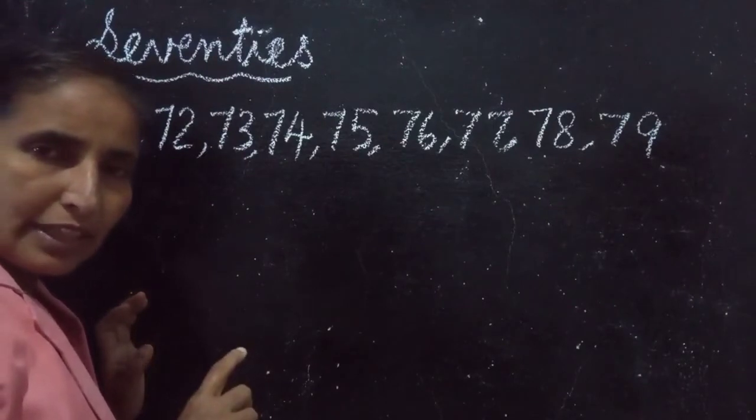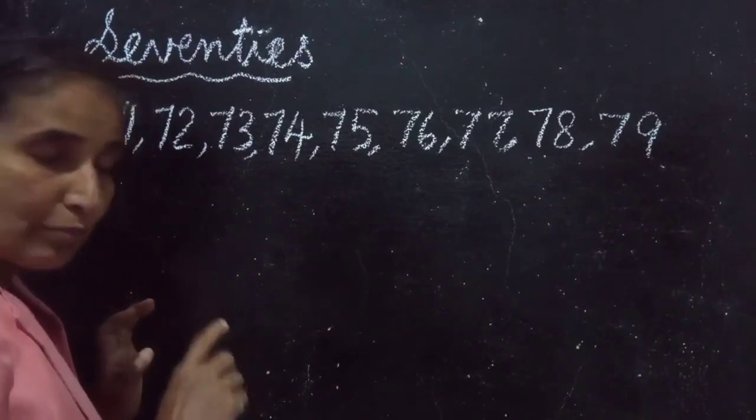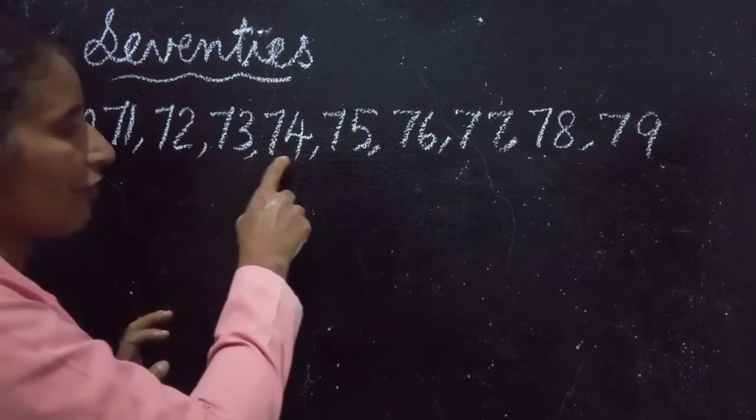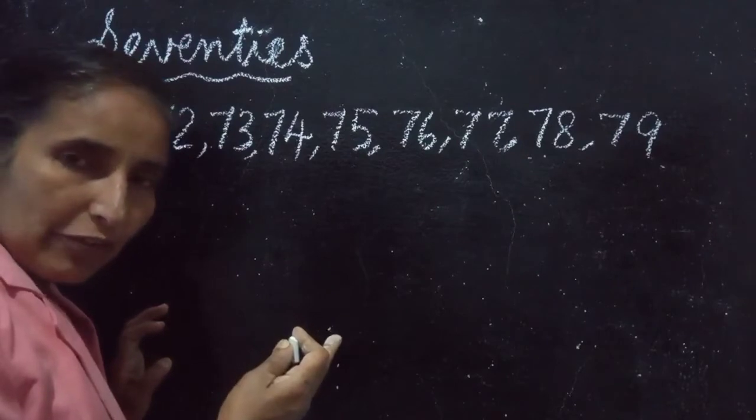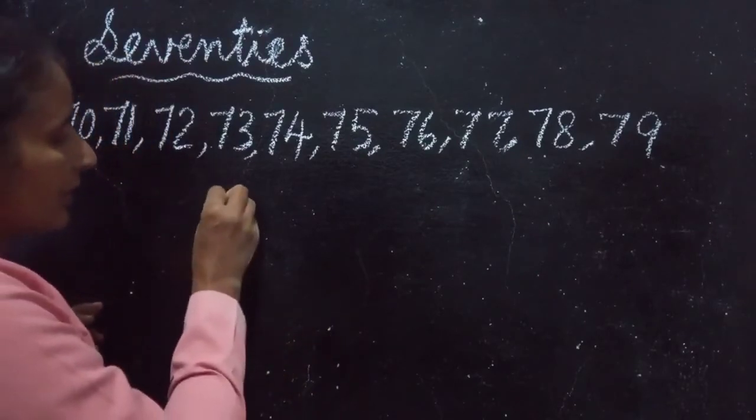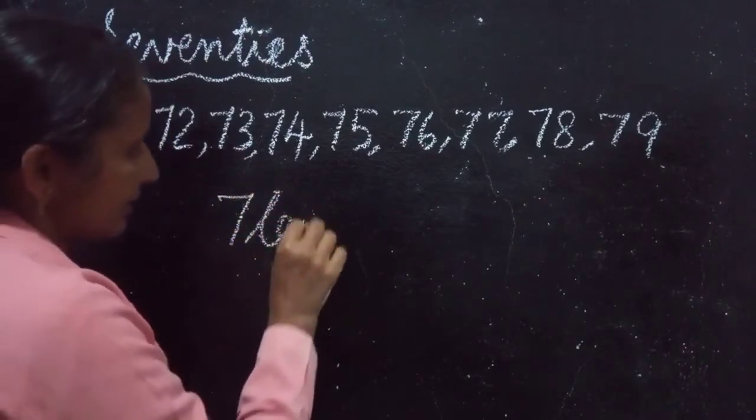Why these numbers are called 70s? Because they all have 7 tens. They all have 7 tens.